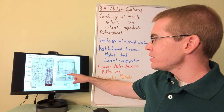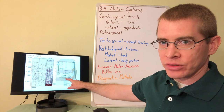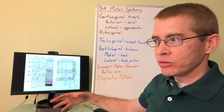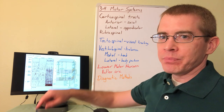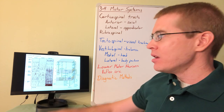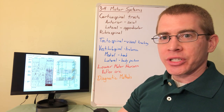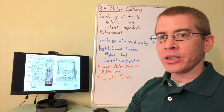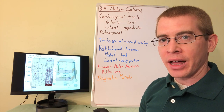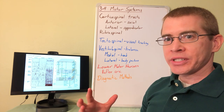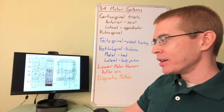You may hear the term Betz cells — B-E-T-Z. Pyramidal neurons are also known as Betz cells and are some of the largest cells in the human body. Some are so large that if you took a section through the primary motor cortex, you could see these cells with the naked eye without a microscope. The larger the cell, the longer the axon can be, and the farther away the muscle fiber it can innervate.